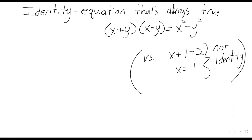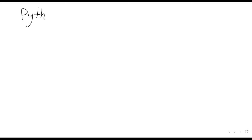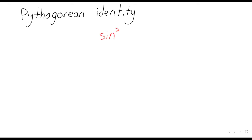Trigonometry has a lot of identities of varying levels of importance, and we've already seen some of them. The single most important identity in trigonometry — introduced before chapter nine — is the Pythagorean identity, which says that sin²(x) + cos²(x) = 1. That's an identity; it's always true, no exceptions, it doesn't matter what x is.